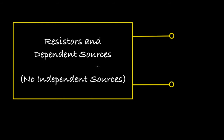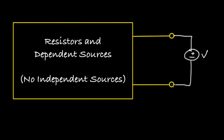When a network contains dependent sources, we don't have a simple set of rules for combining elements that are in parallel or in series. But we can use a generalization of Ohm's law to determine the equivalent resistance of the network. We might, for instance, supply the network with a known voltage V, and then use our analysis methods to determine the current I that would flow through the terminals into the network and back out. The equivalent resistance for this network would be the ratio of the voltage we apply to the resulting current.